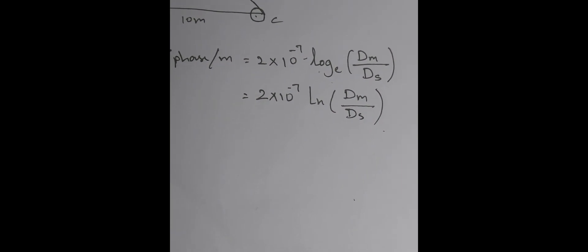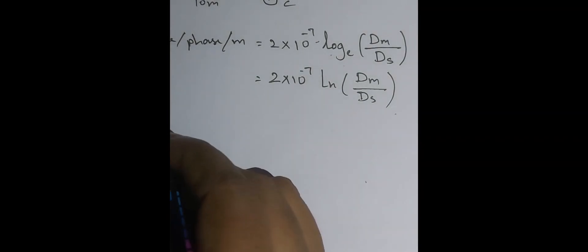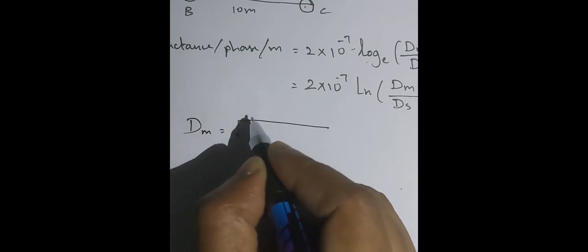This is a very useful shortcut formula: 2 × 10⁻⁷ × ln(dm / ds). Now we have to find dm, which is the mutual geometrical mean distance. For geometrical mean distance, you take the product of the distances and raise it to the power of 1 divided by the number of distances. Here we have only 3 conductors — A, B, C — each constituting one phase. The distances are: A–B is 4 meter, B–C is 10 meter, A–C is 6 meter.